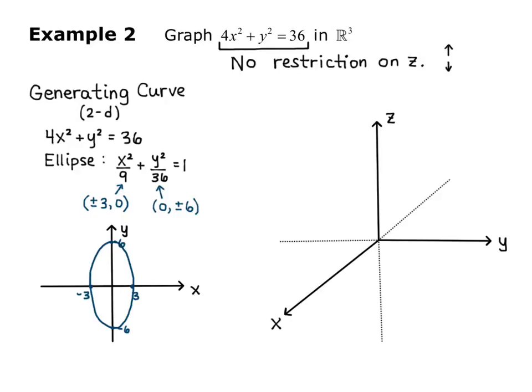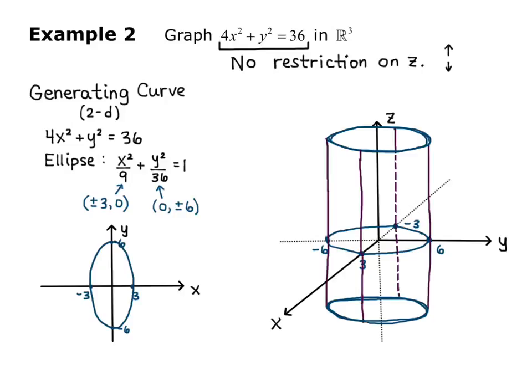Now translating this to three dimensions, we have our XYZ axes. I'm going to plot those points: y is 6 and negative 6, x is 3 and negative 3, and draw my ellipse. Then for expanding along the z-axis, I'm just going to make lines going up and down parallel to the axis with that ellipse on top and below. We end up with that cylinder that's elliptical in shape. It's like an elliptical tube going up and down forever in the positive and negative z directions.